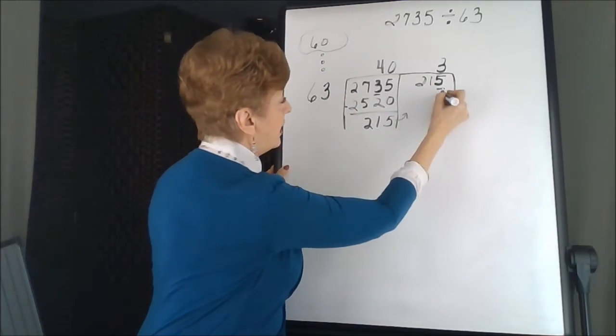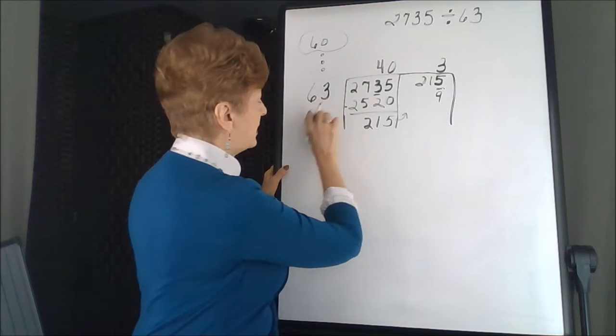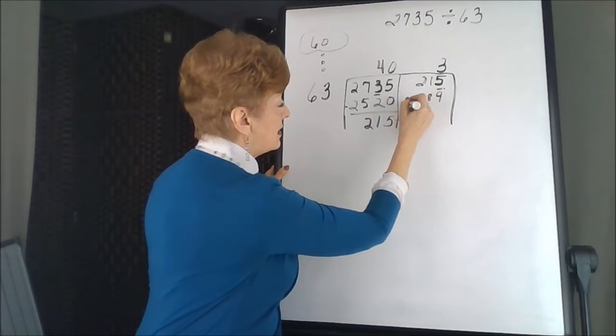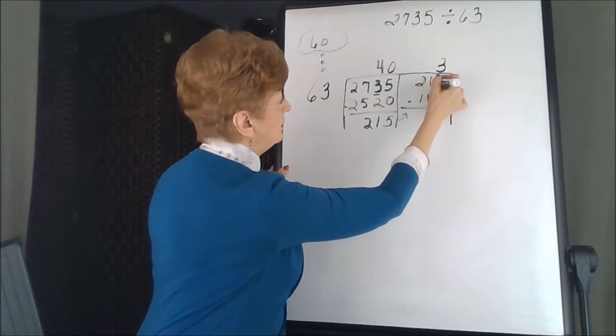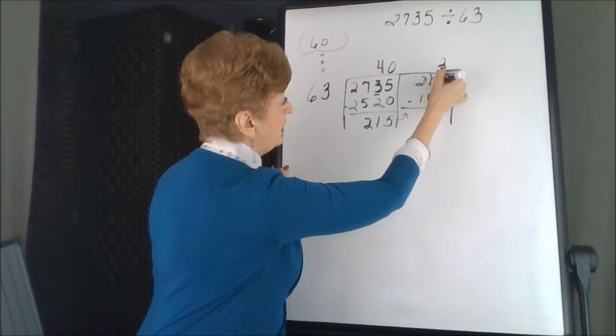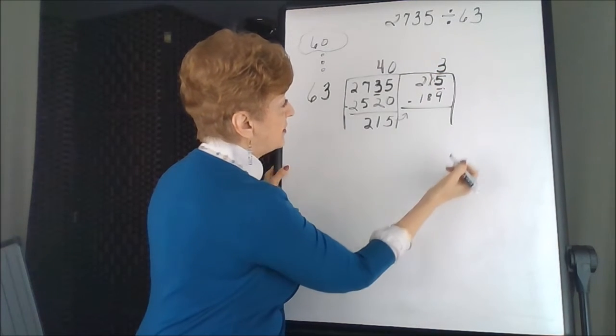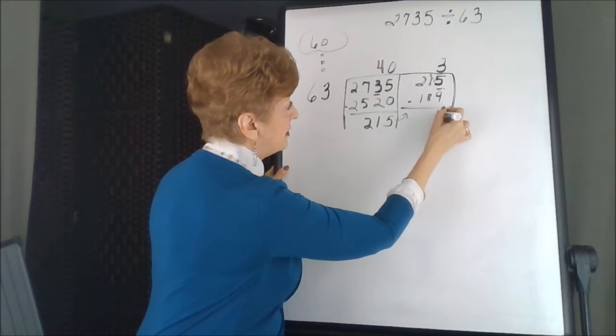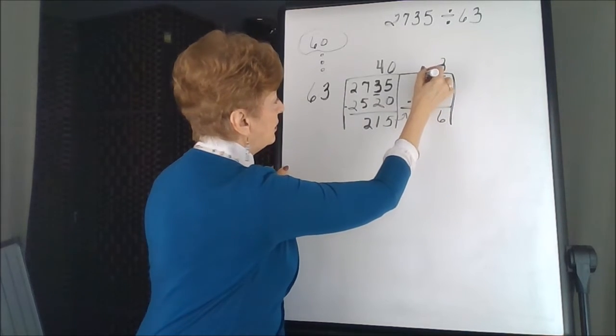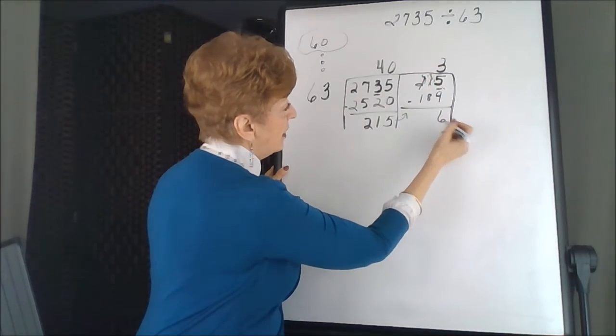3 times 3 is 9. 3 times 6 is 18. Subtract. There's some regrouping that I have to do here. That's 15 take away 9 is 6. And we're going to regroup again. 10 take away 8 is 2.